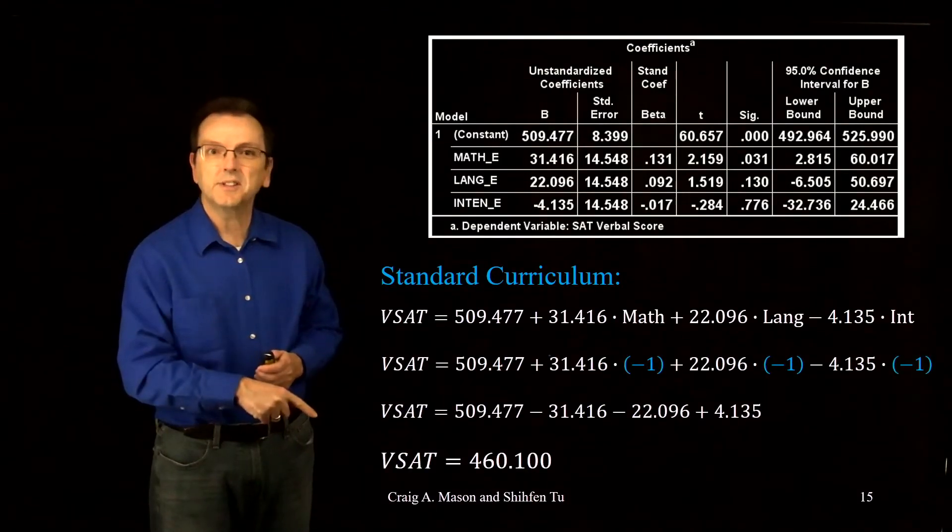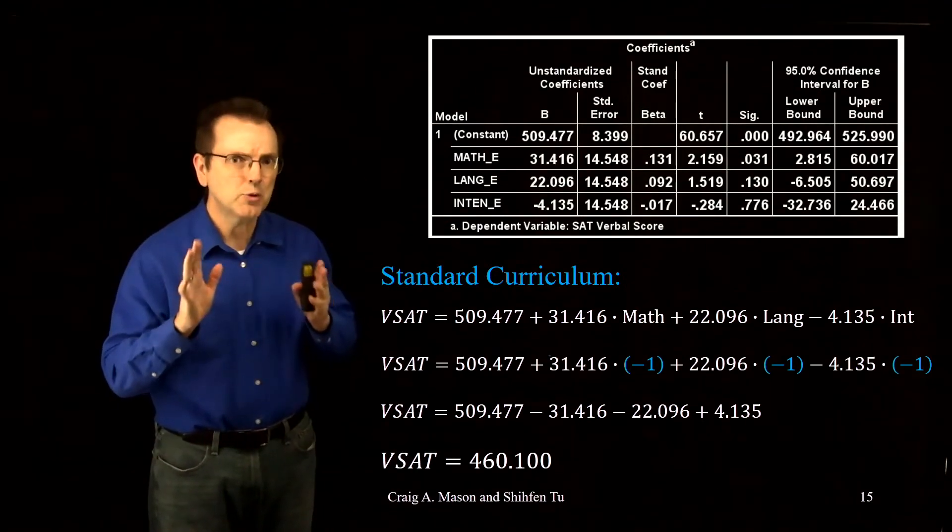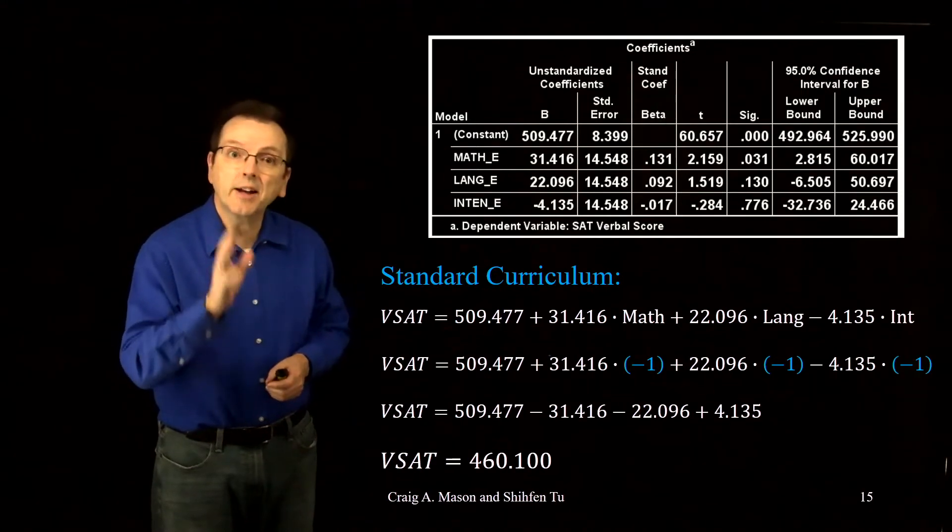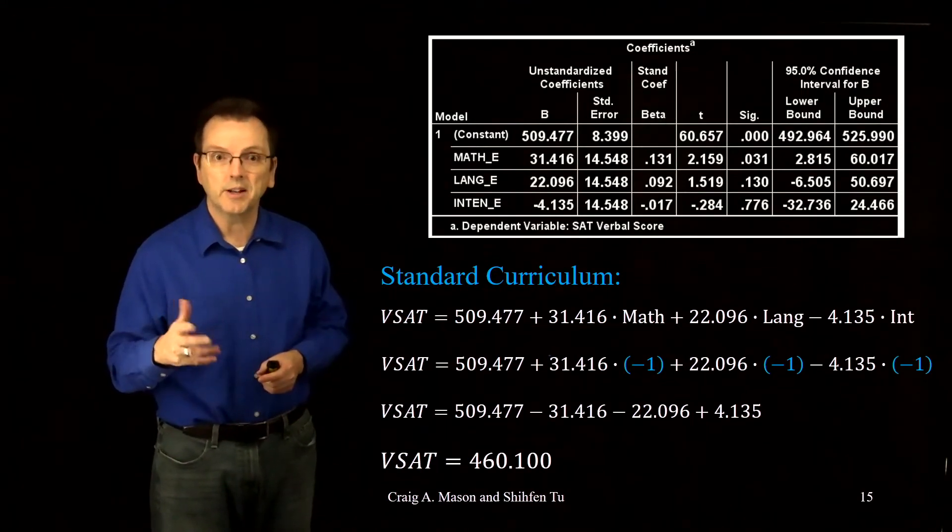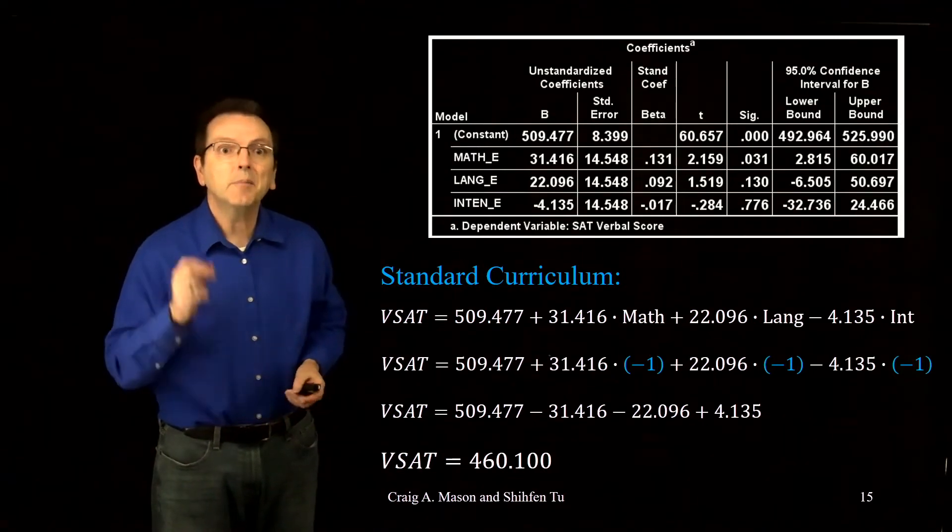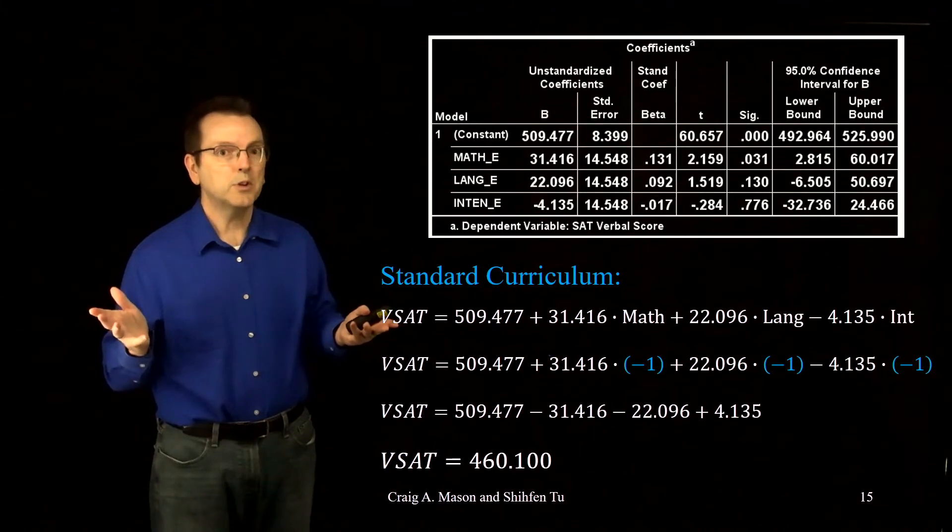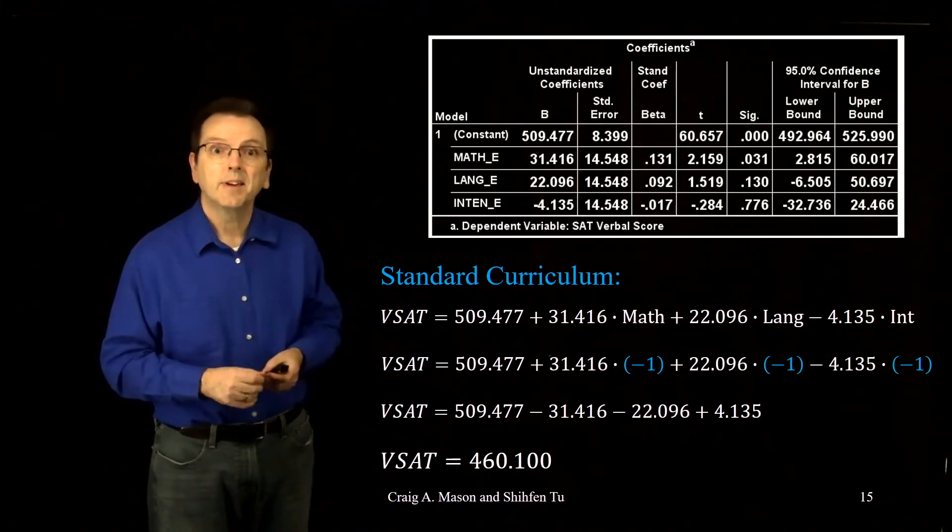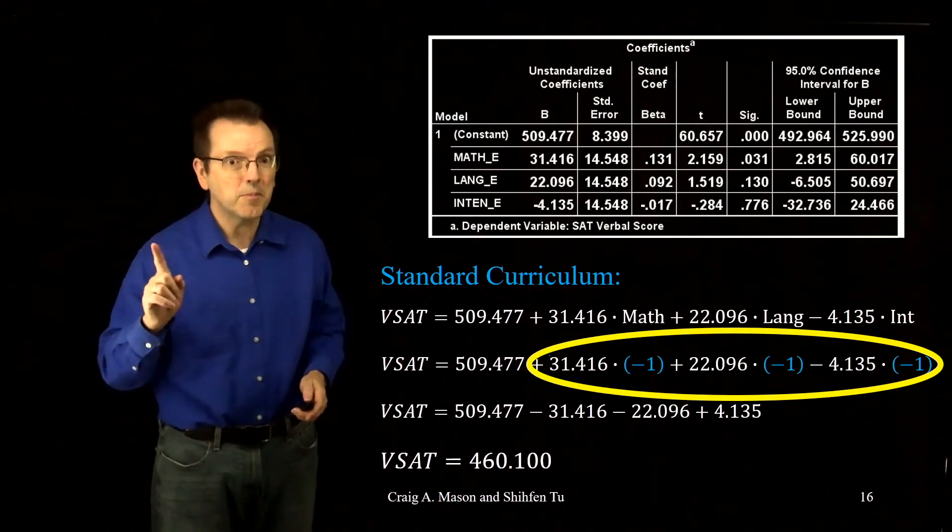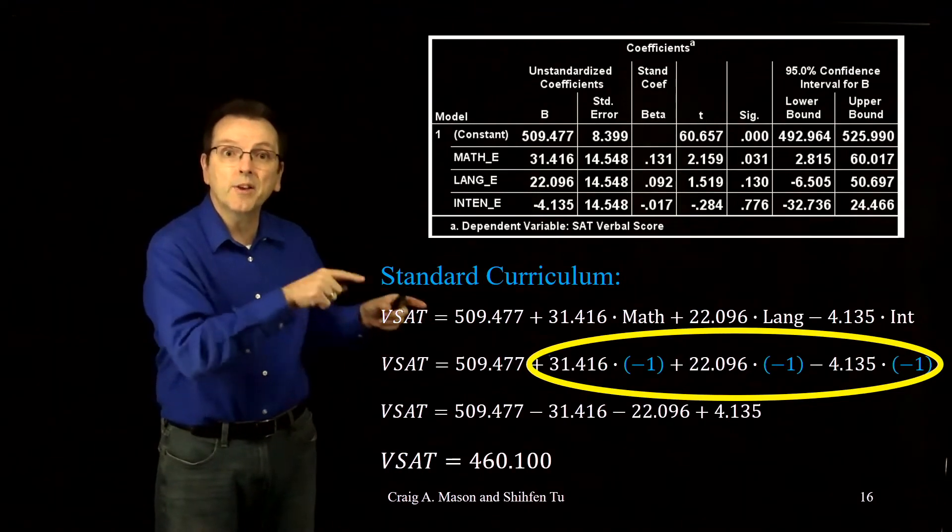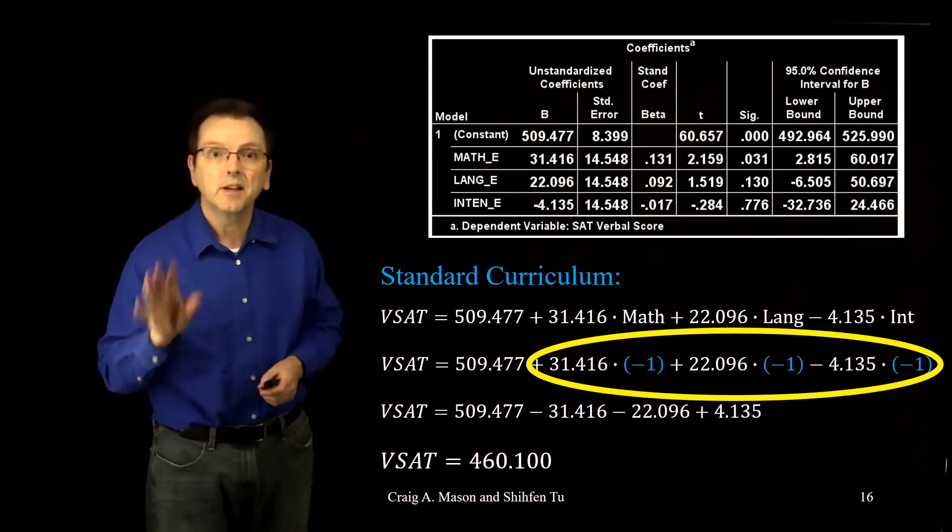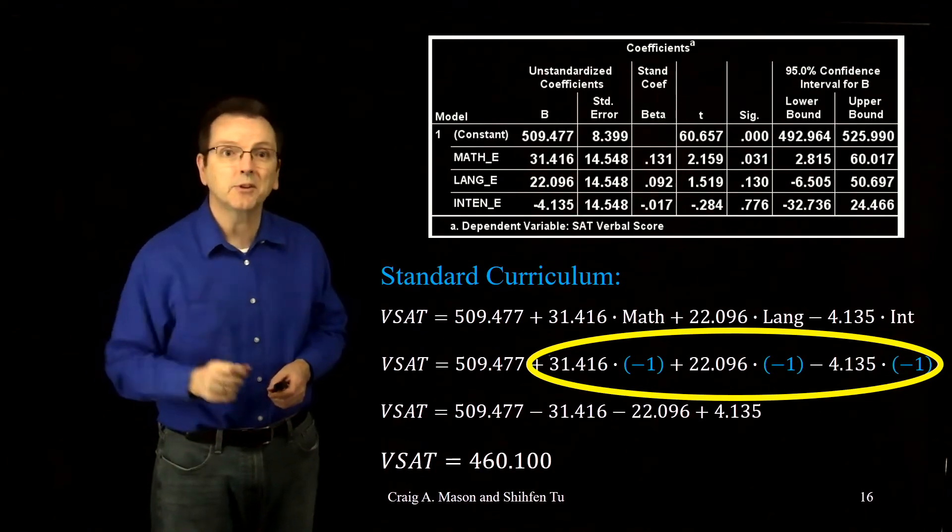Did you get 460.1? If you didn't, don't feel too bad. This is one where a lot of students make a mistake the first time they try it. Remember, one of the groups does not get assigned an effect code. The math-focused curriculum got its own effect code, as did the language-focused curriculum and the intensive curriculum. But the standard curriculum didn't get an effect code. And what do we do for that group in effect coding? Each of the effect codes gets a value of minus one. Not zero, remember? They'd be zero in dummy coding. But in effect coding, they're all minus ones. And that's what makes the other coefficients a comparison to the mean of the means instead of a referent group or some comparison group. Pretty cool.